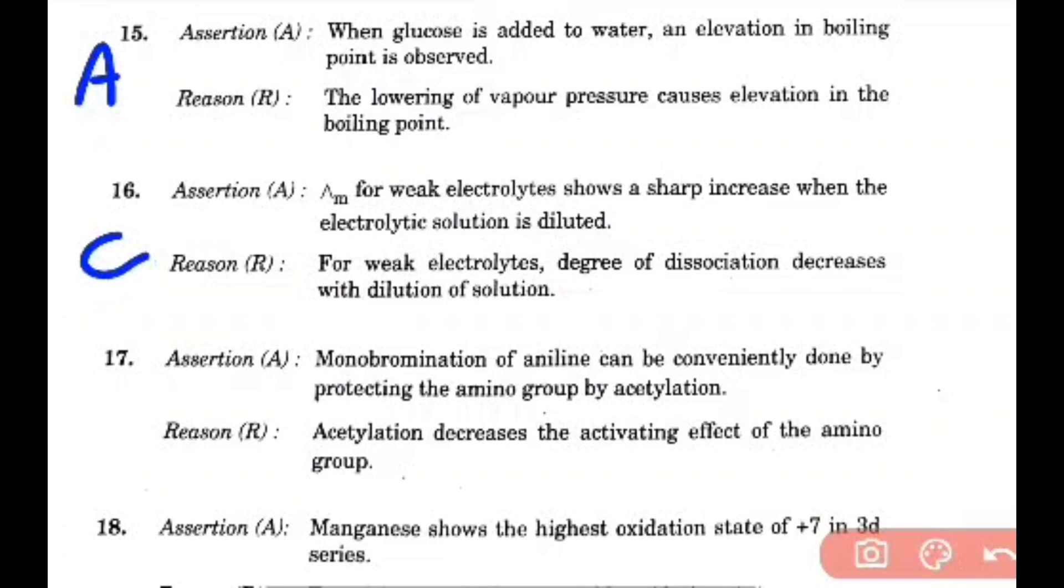Monobromination of aniline can be conveniently done by protecting the amino group by acetylation. Acetylation decreases the activating effect of the amino group. Here option A is the right answer.